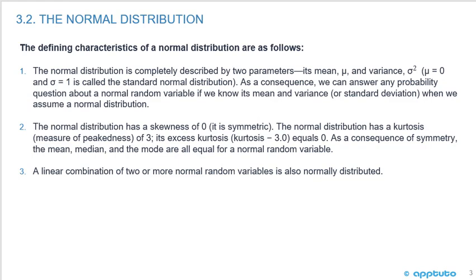When μ equals zero and the standard deviation is one, it's called the standard normal distribution. As a consequence, we can answer any probability question about a normal random variable if we know its mean and variance, or standard deviation, when we assume a normal distribution.